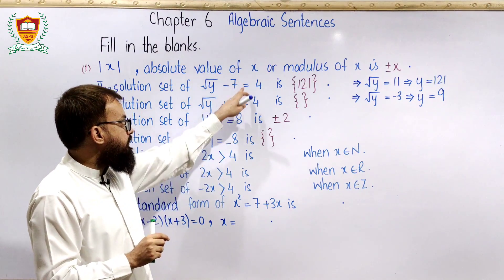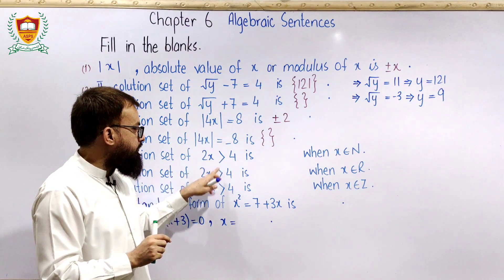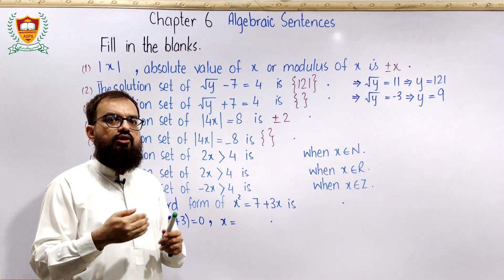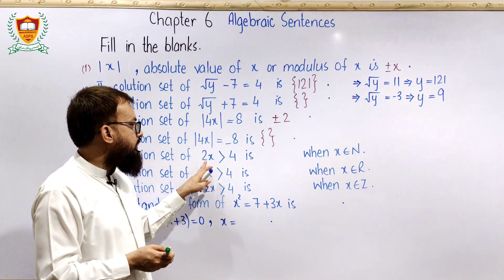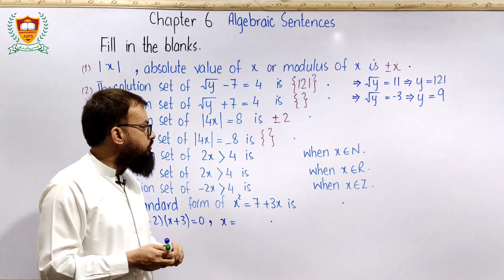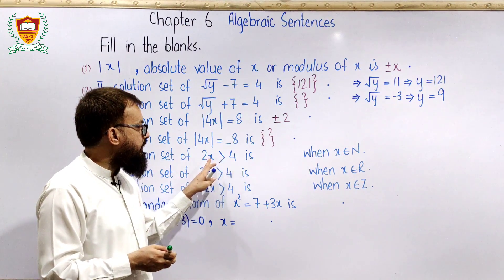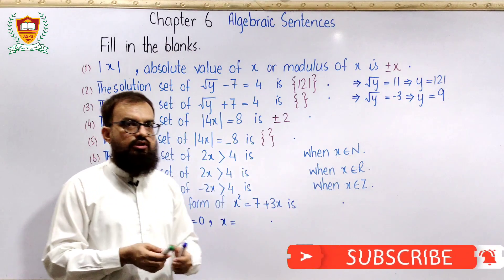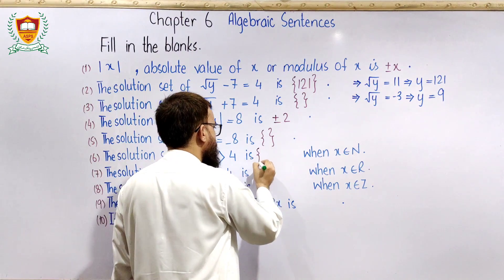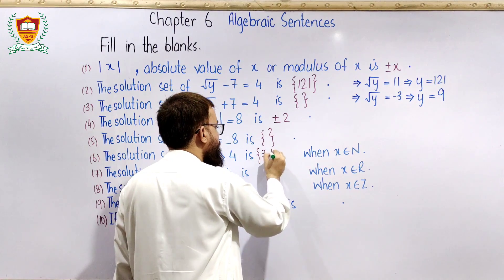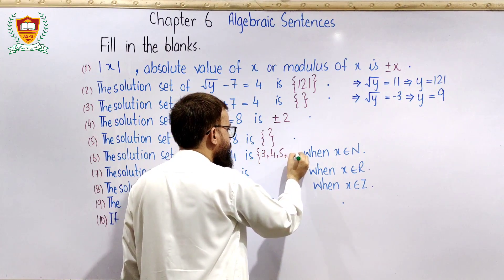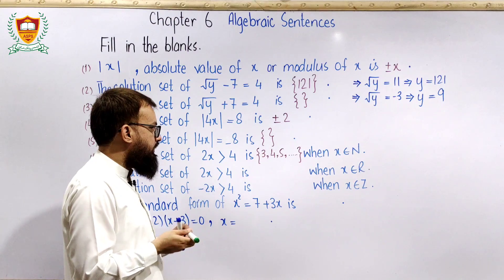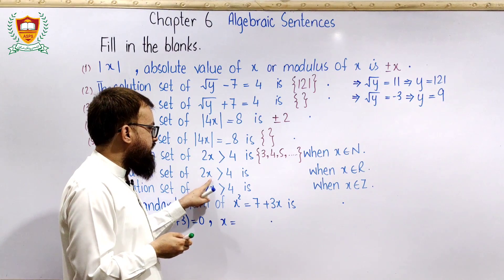اب تک equations discuss کیں، اب inequalities کی بات کرتے ہیں۔ جہاں greater than یا less than کا sign آئے وہ inequality ہے۔ مثال: 2x > 4 — 2 سے divide کریں تو x > 2۔ Natural numbers میں greater than 2 کا solution set ہے {3, 4, 5, ...}۔